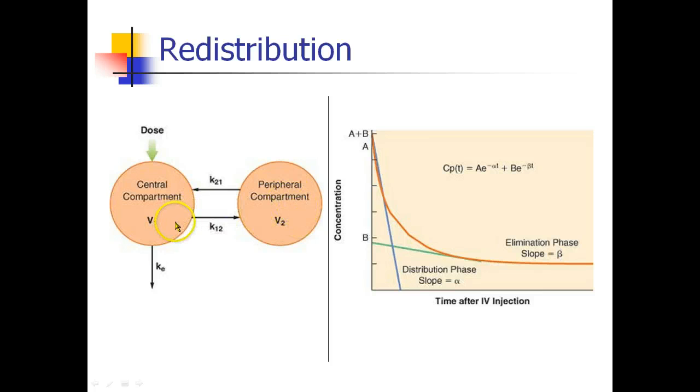There are constants that describe how quickly this happens, how quickly it moves back into the central compartment, and are these faster or slower compared to elimination. When we look at the concentration of drug in the plasma as a function of time, we see that it drops off pretty rapidly, and then it starts to level off and drop a lot more slowly. This first rapid drop is called the distribution phase, the alpha phase. This is the drug being redistributed from the plasma into the peripheral tissues, into the peripheral compartment. And then this second phase, which is still decreasing much more slowly, describes the elimination phase.